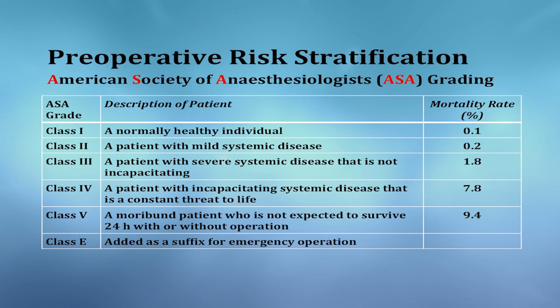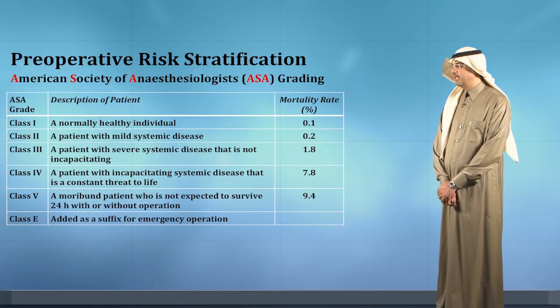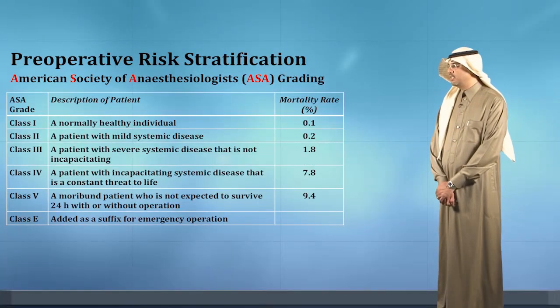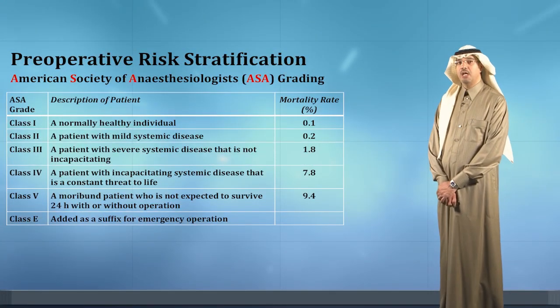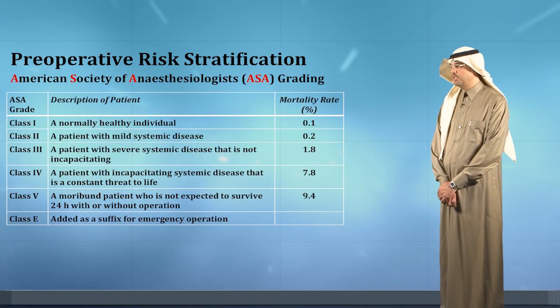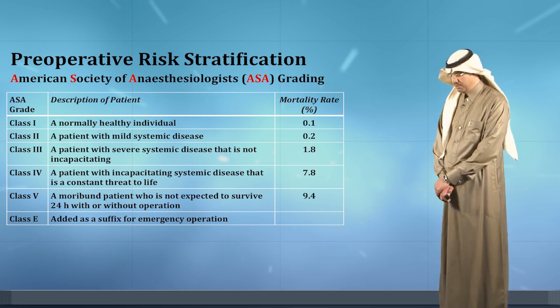Class 5 is a moribund patient who is not expected to survive more than 24 hours. Class E is a suffix applied to any kind of emergency procedures.